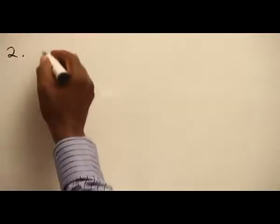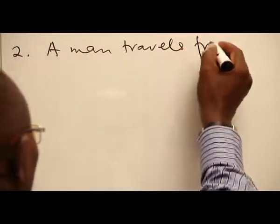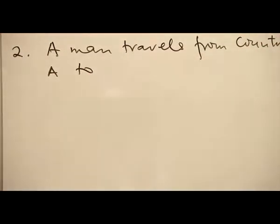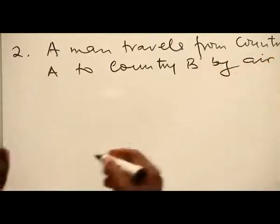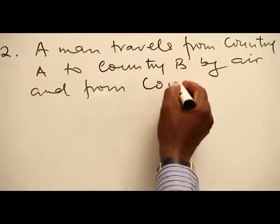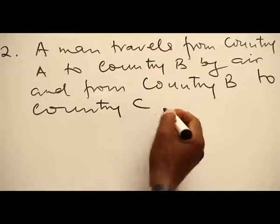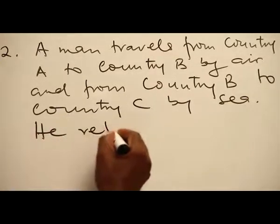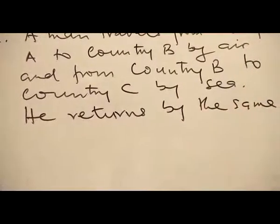Number two: the mat travels from A to B, round onto B, toe onto C — that's C. It returns by the same means.